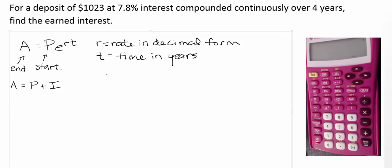All right, so in this case, we know that P is equal to $1,023. That's how much we start with in the account.